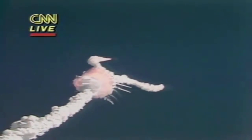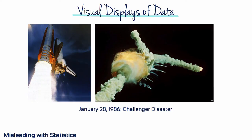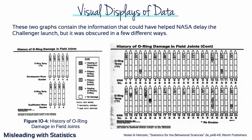The 25th space shuttle mission is now on the way after more delays than NASA cares to count. It was so cold in the morning of January 28th, 1986. Icicles were hanging off the scaffolding surrounding the space shuttle Challenger. The night before, Morton Thiokol engineers and NASA officials had debated the data concerning the effect of cold temperatures on the giant rubber-like O-rings that seal the separate sections of the rocket boosters. The engineers had even sent NASA officials 13 tables and graphs that documented increasing damage to the O-rings in colder weather, trying to make a case to delay the launch. These two graphs contain the information that could have helped NASA delay the Challenger launch, but it was obscured in a few different ways.